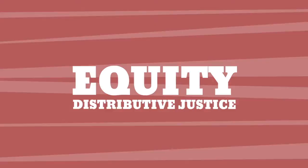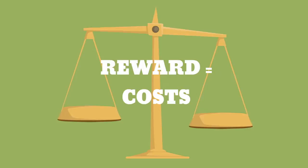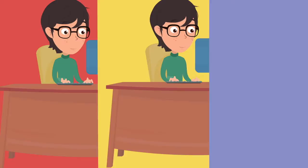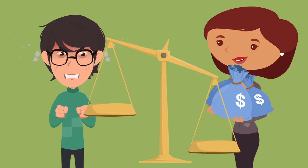The last element of the social exchange theory we will discuss is equity, or distributive justice. As the name suggests, this element is concerned with fairness. The goal is to have an equal ratio of rewards to costs for both partners. The more costs we incur, the more we're expected to be rewarded. For example, if Philip has to give up two consecutive lunches for a work meeting, he may expect a bigger reward, such as a bonus, rather than an additional baseball ticket.